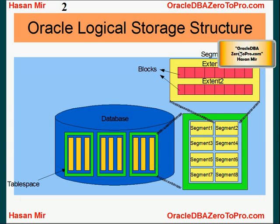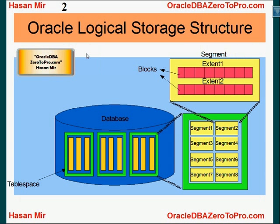We already know the logical storage structure of Oracle. Tablespaces are simply a group of physical database files. From the logical end, you can break the tablespace further into segments. If you drill down into segments, you will see extents. And if you drill down into extents, you're going to see blocks. And we already talked about that blocks consist of bytes.